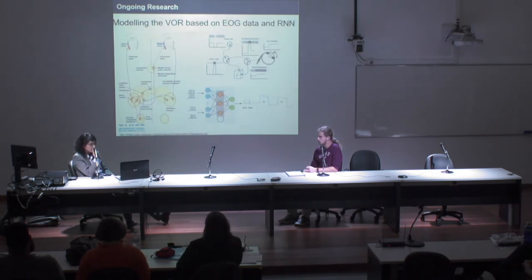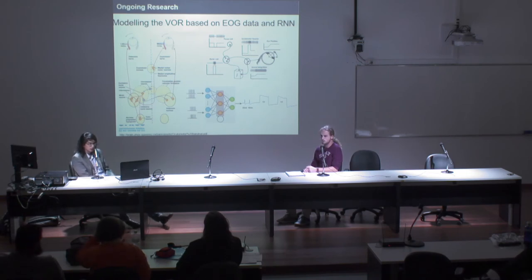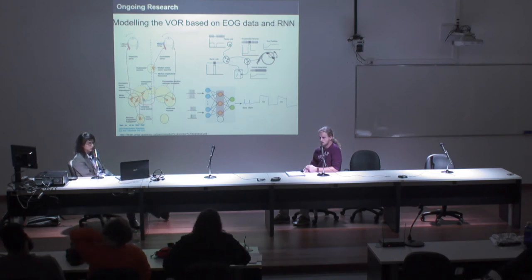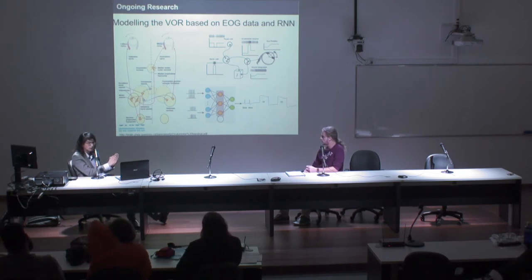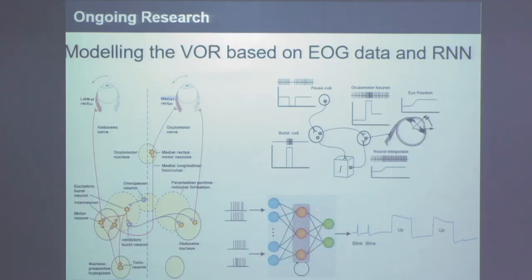Finally, another area of ongoing research is my master's thesis. We are working on modeling the vestibulo-ocular reflex using EOG data and recurrent neural networks. As input, we have the head angular velocity. The vestibulo-ocular reflex is the compensatory eye movement that occurs when I move my head — for example, when I move my head to the left, my eyes automatically move to the opposite side to stabilize the image I'm looking at.